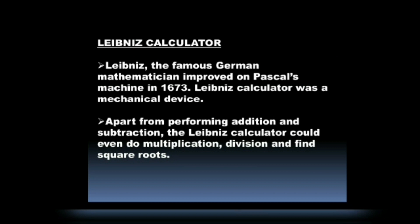Next is the Leibniz Calculator. Leibniz, the famous German mathematician, improved on Pascal's machine in 1673. The Leibniz Calculator was a mechanical device. Apart from performing addition and subtraction, the Leibniz Calculator could also do multiplication, division, and find square roots.